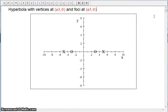We want to graph the hyperbola. We want to find the equation of the hyperbola and sketch a graph of the hyperbola with vertices at plus or minus 3, 0, and foci at plus or minus 5, 0. Let's see how we do that.